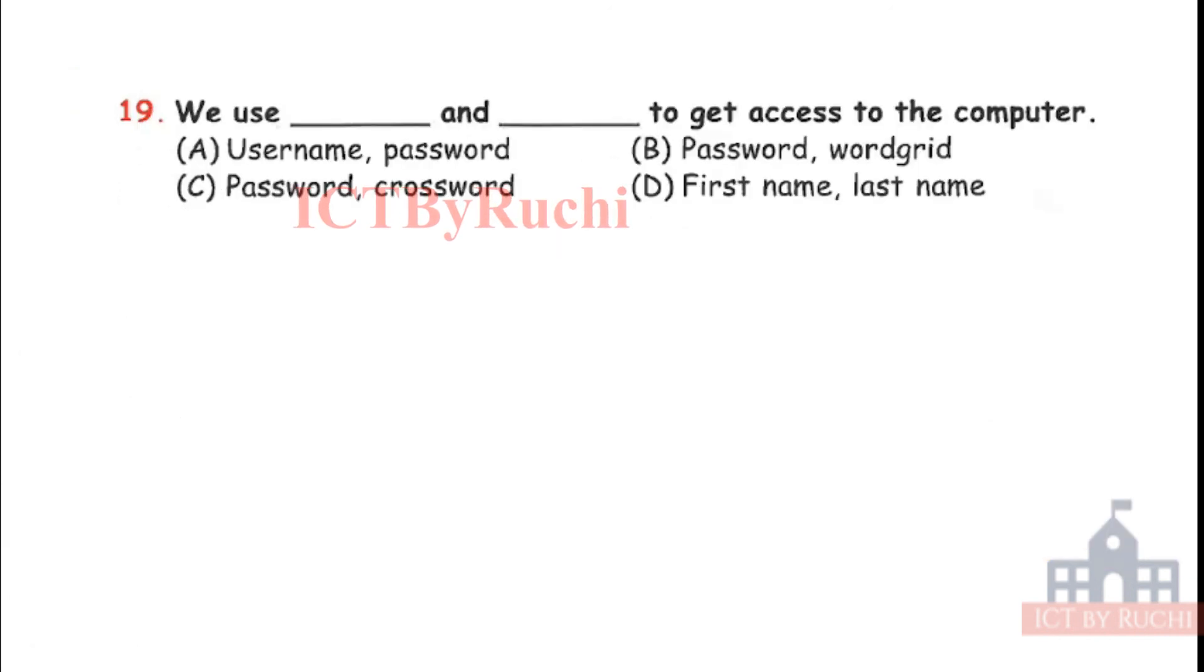Next question. We use dash and dash to get access of the computer. A. Username and password, B. Password and word grid, C. Password and crossword, or D. First name, last name. It's very easy. So the answer is A. We need username and password to get access to the computer.